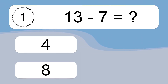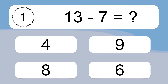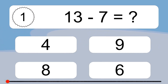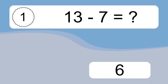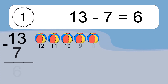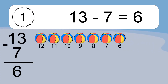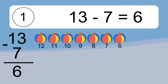13 minus 7 equals what? 13 minus 7 equals 6. Let's count it: 12, 11, 10, 9, 8, 7, 6.